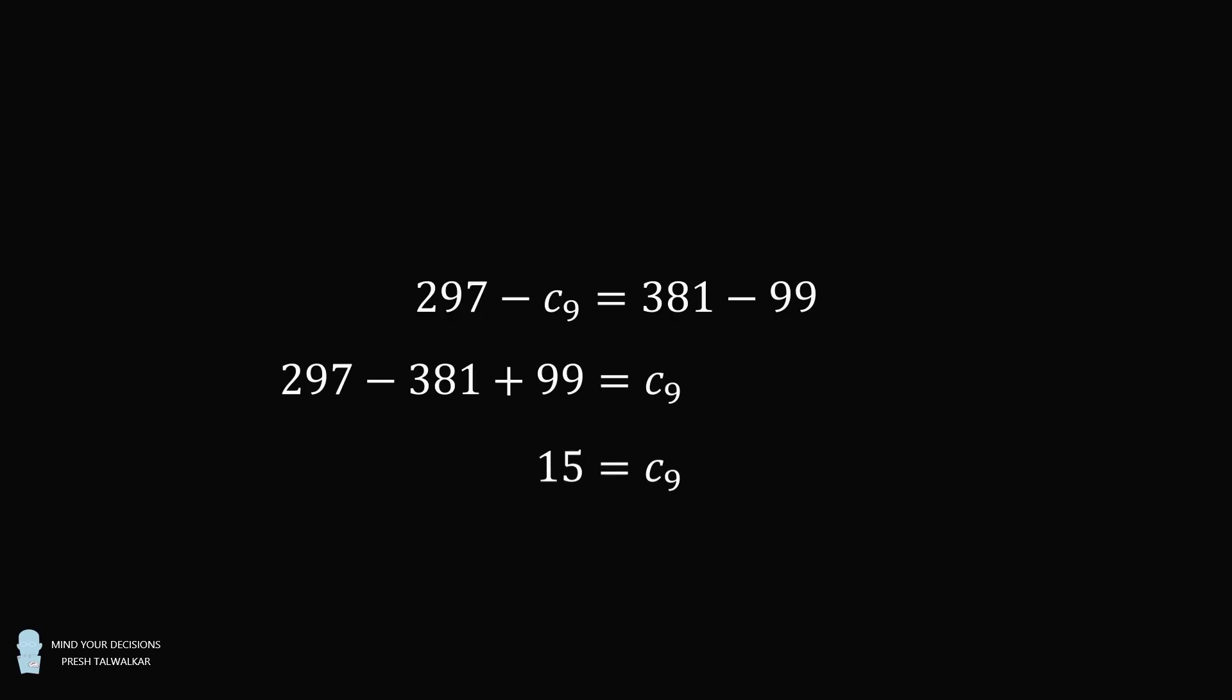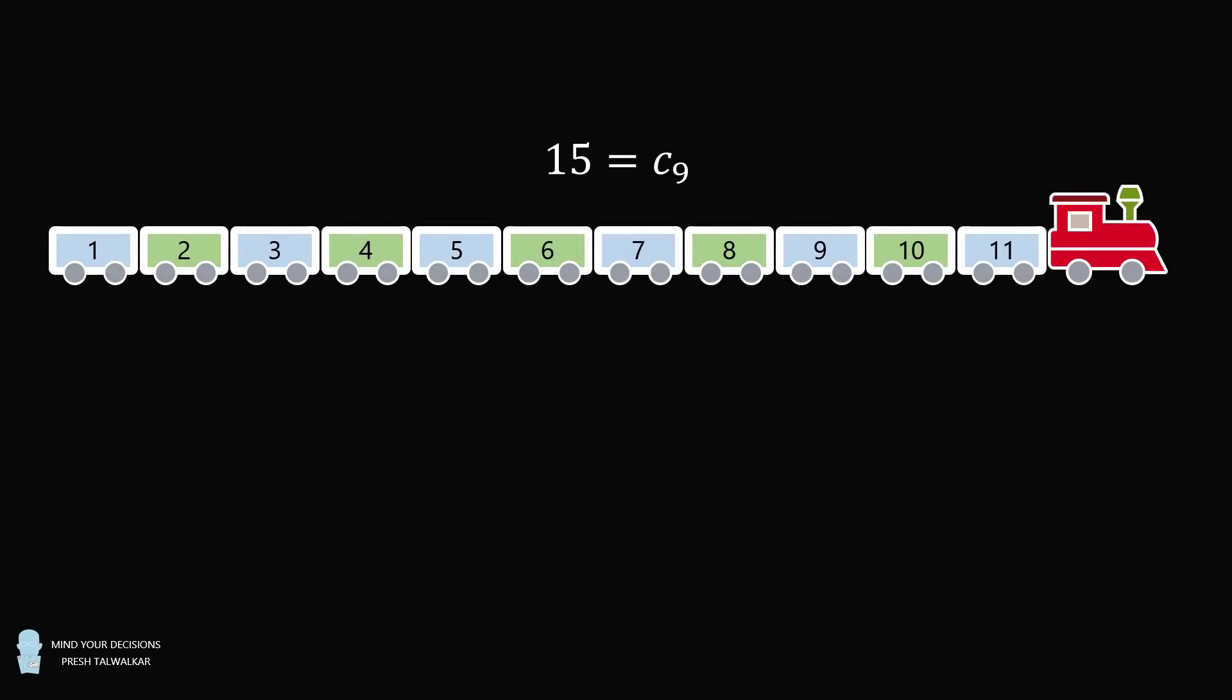So there are 15 passengers in carriage 9. That's the solution to the question. But we want to make sure it's not an impossible problem. I just want to demonstrate there is a way to distribute the passengers that meets the original conditions.